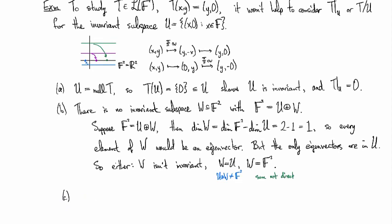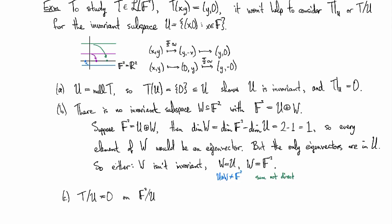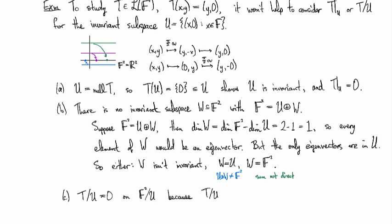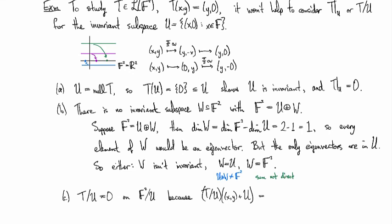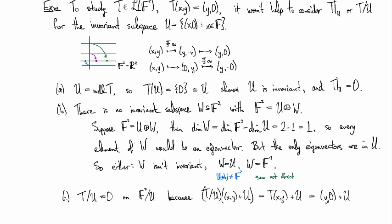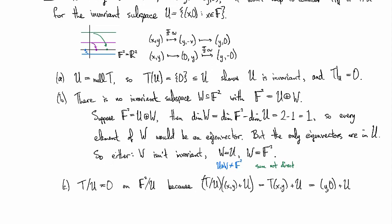Now if we look at the other one, T mod U, this one is equal to 0 on F² mod U. Because if we're looking at the quotient map here, we'll apply this to an (x,y) plus U slice. Then by the definition of the quotient map this is going to be T(x,y) plus U. And then this is by the definition of T going to be (y,0) plus U. But then you see that since (y,0) is an element of U, this is the same thing in the quotient space as the zero element.